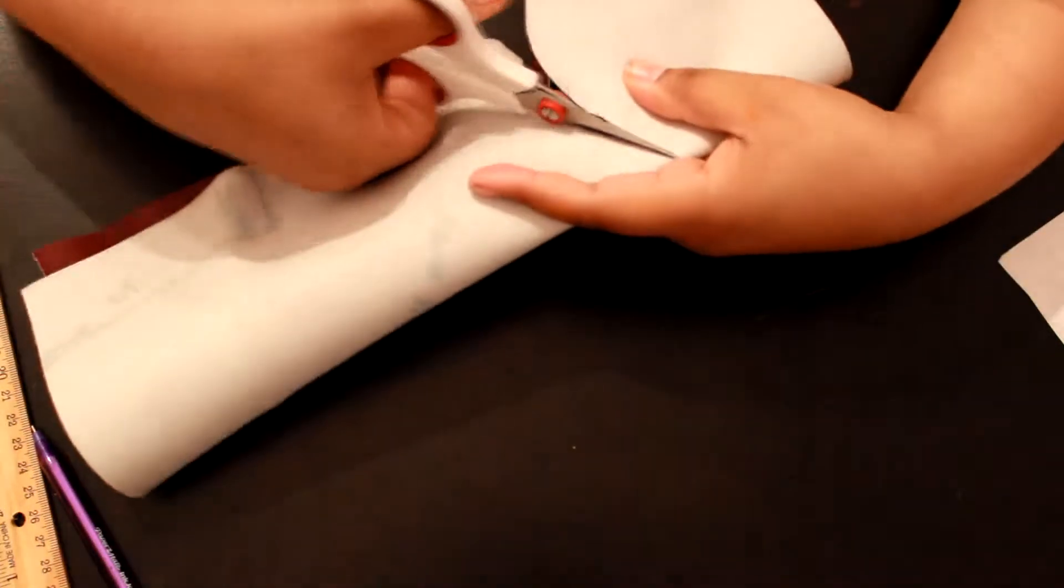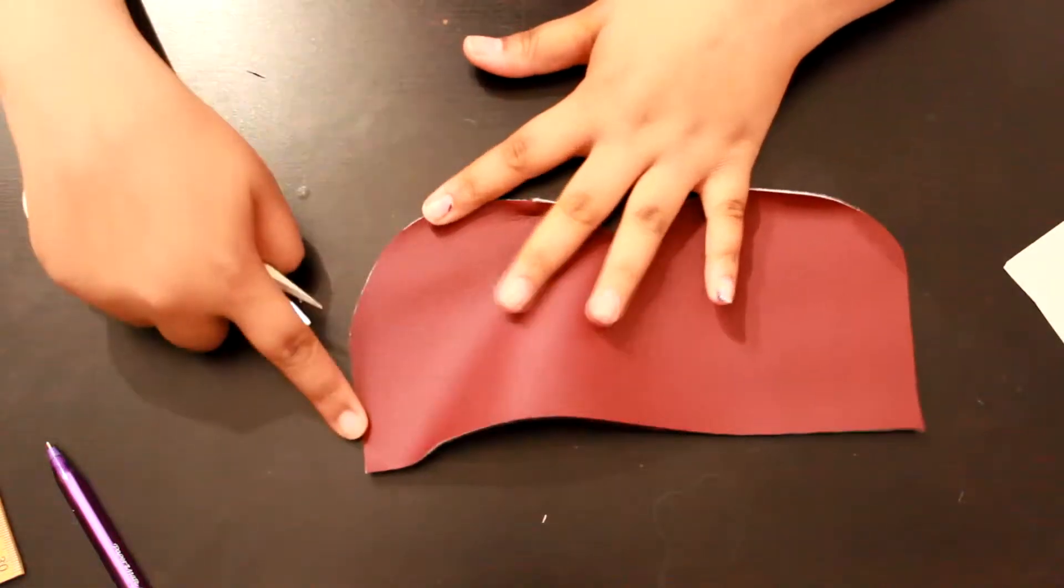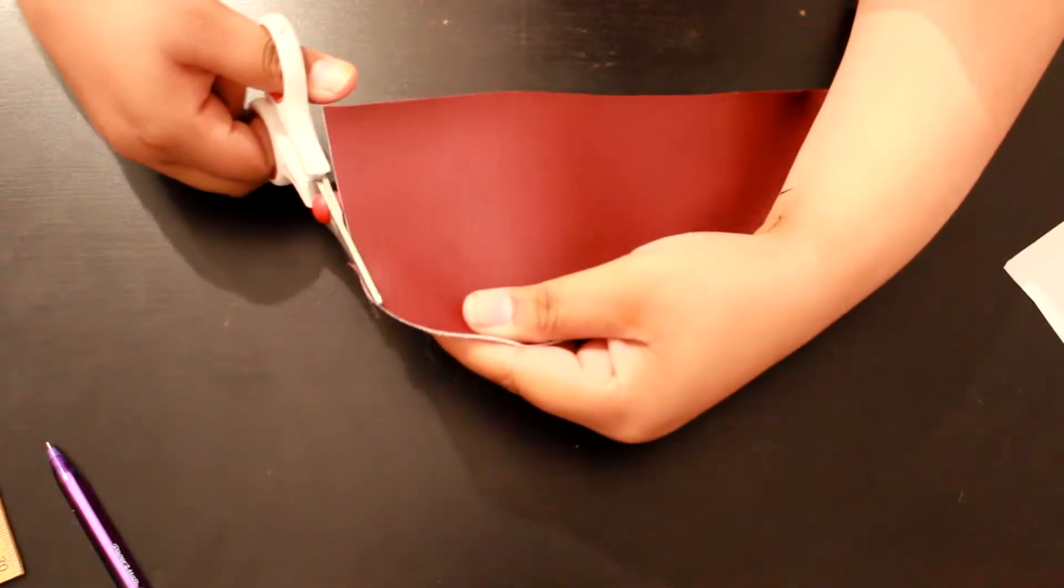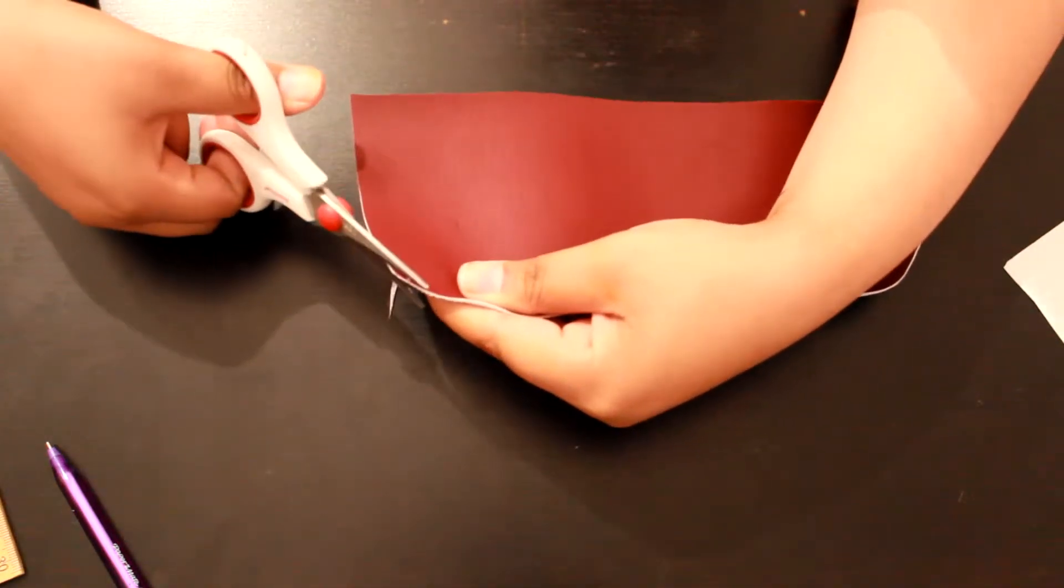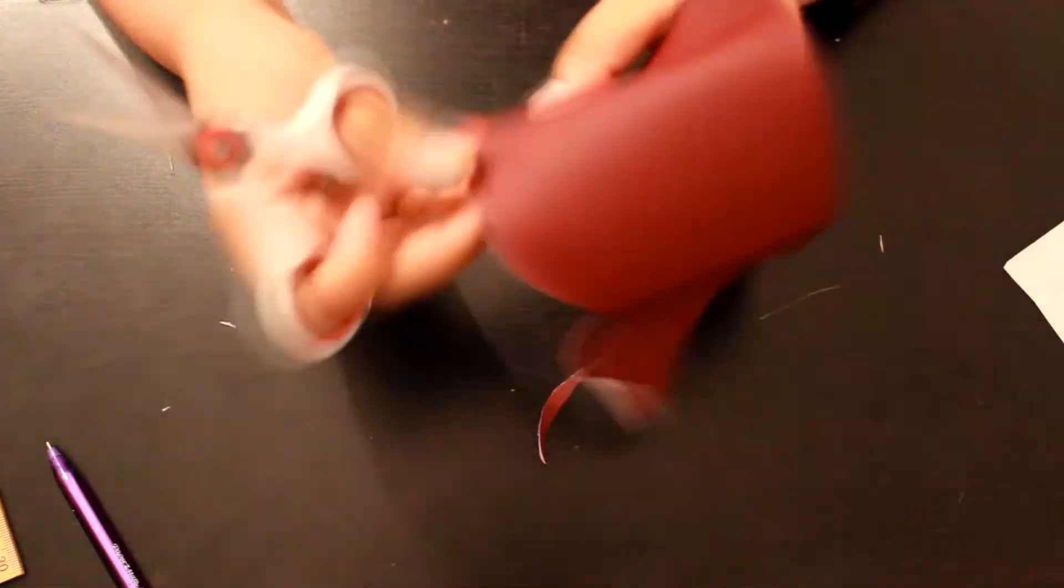And now I'm just going to cut the fabric. Once I cut it, I actually realized that it was a bit too square, so I'm just going to round off the sides. And once you've done that, you can actually just take this piece and trace it onto the leather fabric to create the other side.